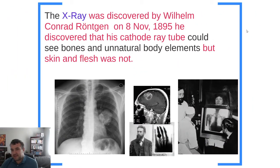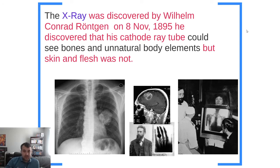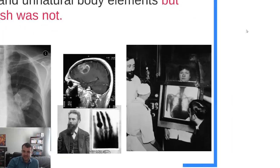The X-ray was discovered by Wilhelm Conrad Röntgen in November 1895. He discovered that if you put a cathode ray tube in front of a camera and took a picture, you could see things inside people's bodies and notice any kind of unnatural body elements — you've got X-ray vision. It's really helpful for doctors, especially knowing where some kind of problem is inside a person under their skin.